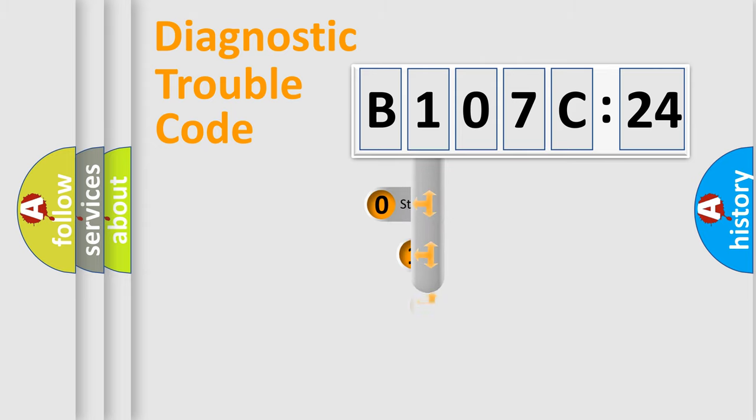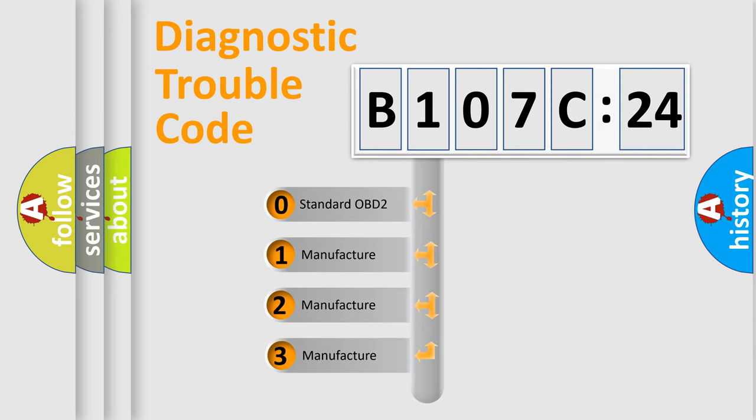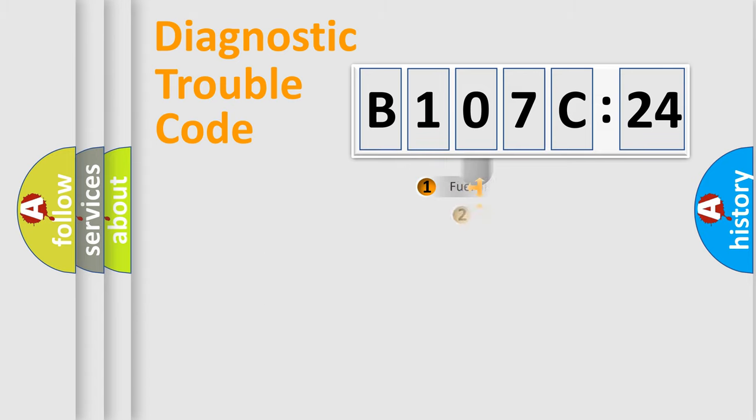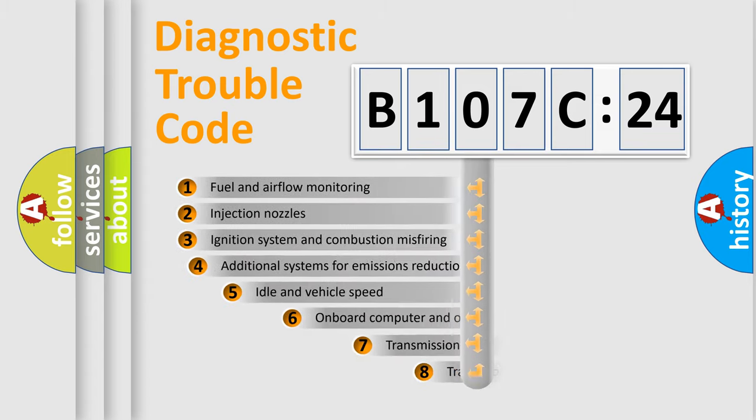This distribution is defined in the first character code. If the second character is expressed as zero, it is a standardized error. In the case of numbers 1, 2, 3, it is a manufacturer-specific expression of the car-specific error.